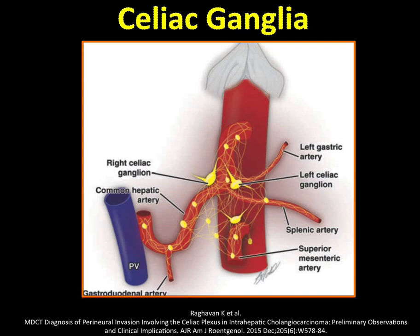A little bit of anatomy to actually understand what we're looking at: something that we don't think about that often when we're reading CT scans is the sympathetic autonomic nervous system, and part of that system is the right and left celiac ganglia.